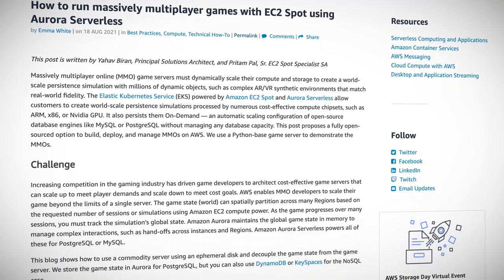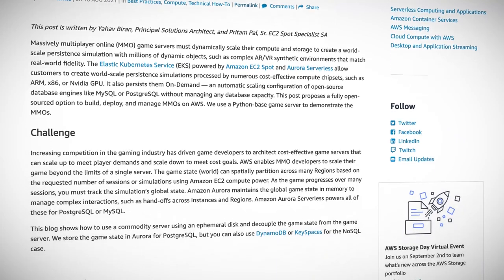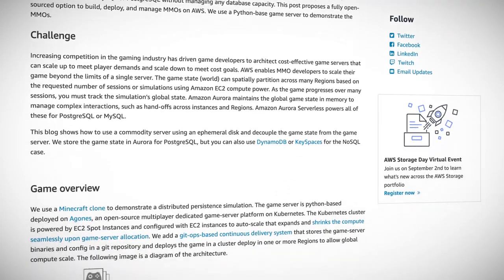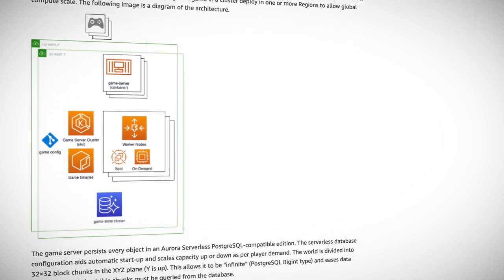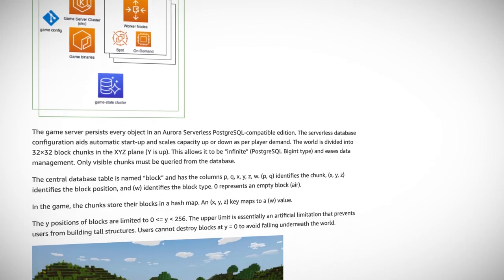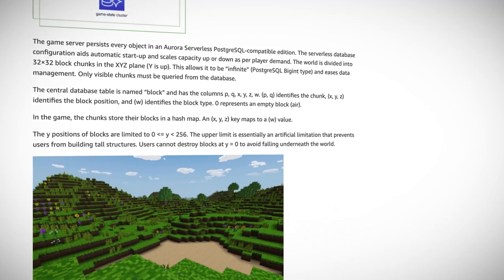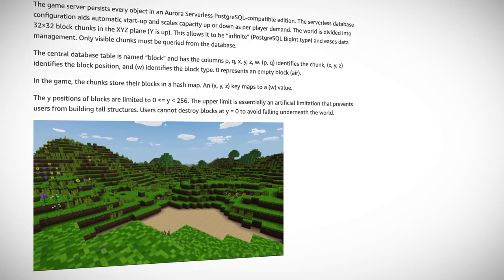Next up in the AWS compute category, there's a really interesting article about how to run massively multiplayer online games with EC2 Spot using Amazon Aurora Serverless databases. It's a huge challenge for game developers to build cost-effective game servers that can scale depending on player demand — not everyone plays at the same time. Loads of people play after work at night and not many in the morning, so they need to scale accordingly.